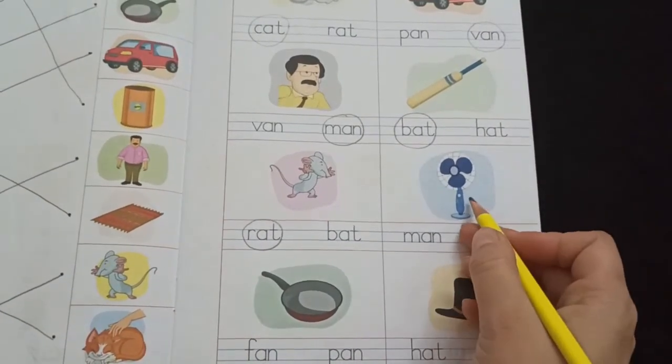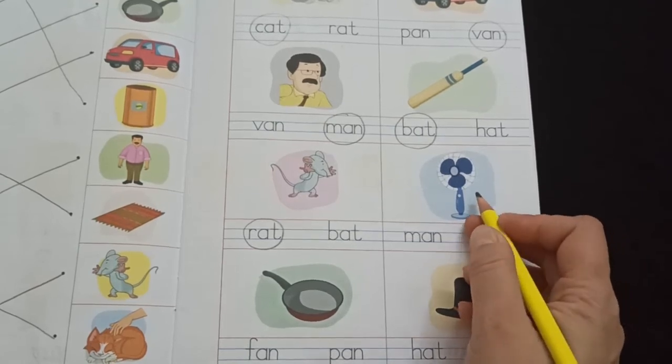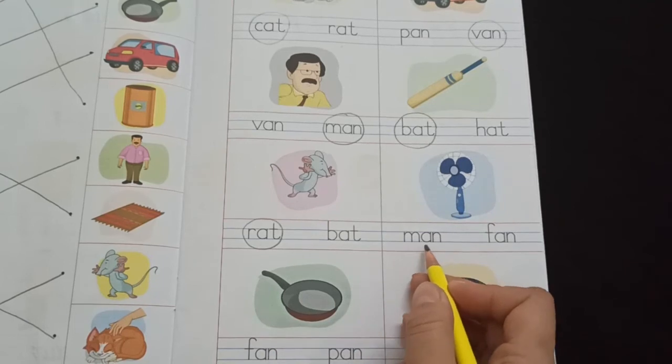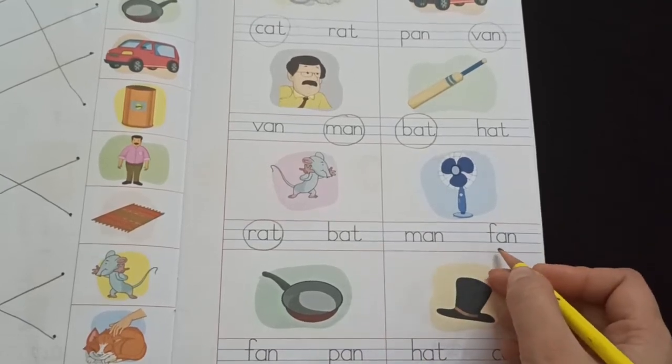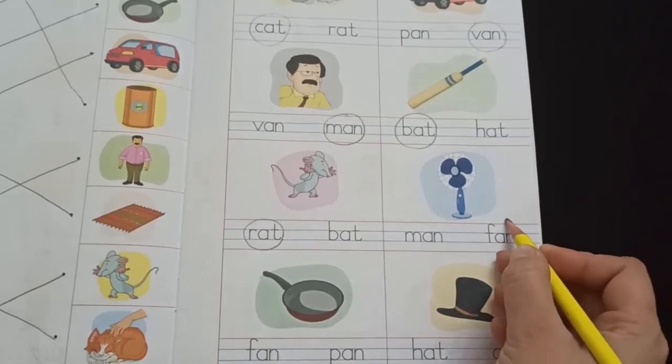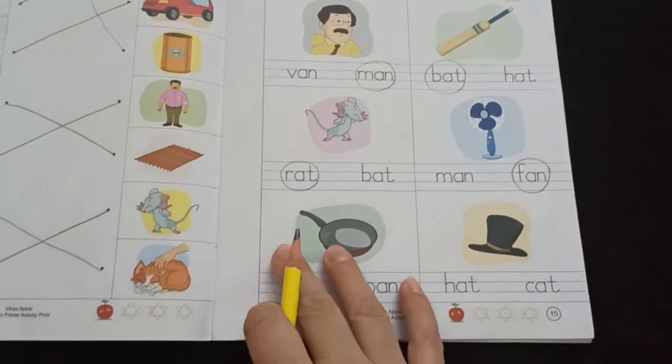Now, fan. This is a picture of a fan. Let's read the words. M-A-N, man. F-A-N, fan. So, the correct word is fan. Fan.